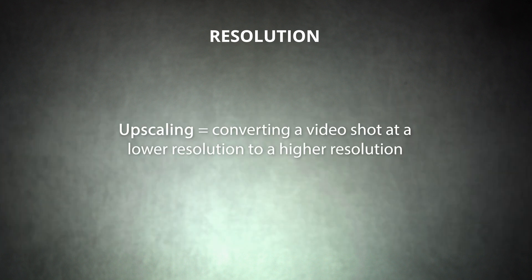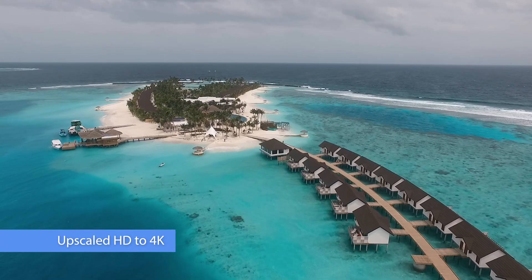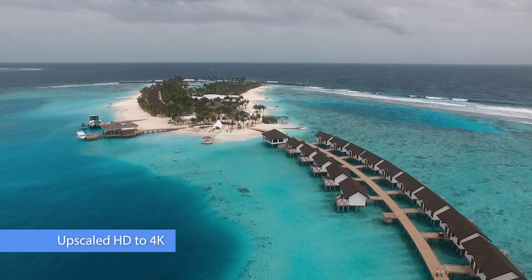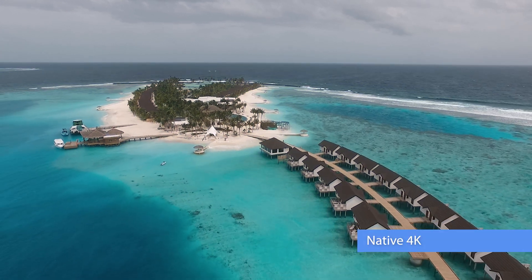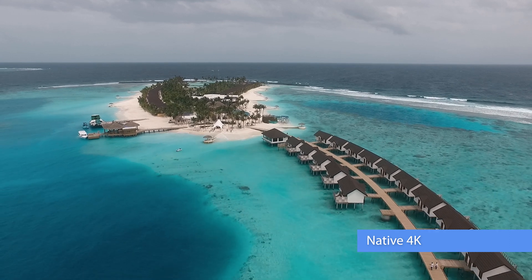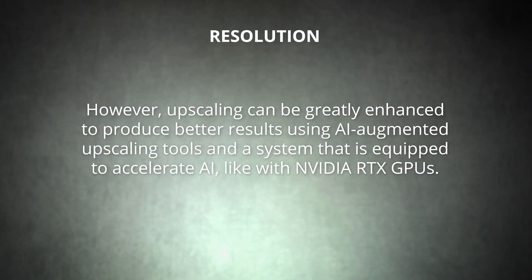The opposite of downscaling is upscaling — the process of converting a video shot at a lower resolution to a higher resolution. Converting an HD video to 4K is the most common example. While technically possible, the results of upscaling are not always ideal, because your editing software needs to create new pixels based on the information provided in the original file. Upscaling HD footage to 4K won't add any new detail to your image. However, upscaling can be greatly enhanced using AI-augmented upscaling tools on a system equipped to accelerate AI, like with NVIDIA RTX GPUs. In the end, upscaling and downscaling are both handy options, but if you know the desired delivery resolution, it's best to shoot in that resolution from the start.